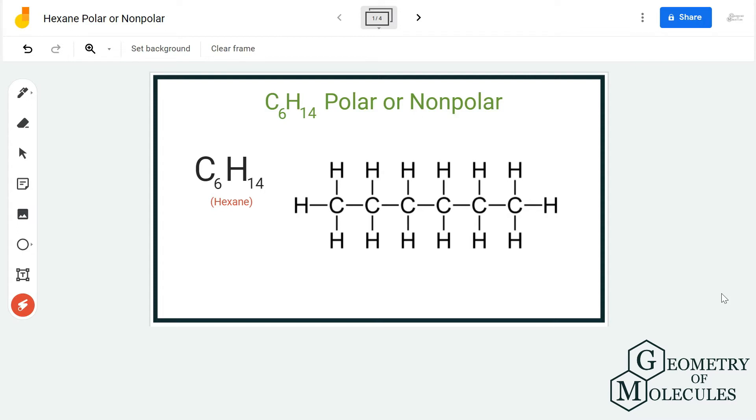We'll examine the difference of electronegativities of the atoms. So first, we are going to look at the Lewis structure for C6H14, which is the chemical formula for hexane. It has a chain of six carbon atoms that forms the backbone of the molecule.